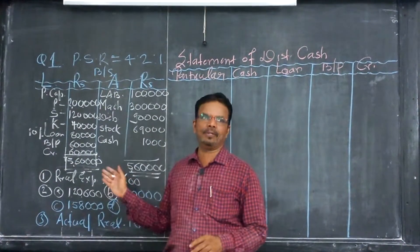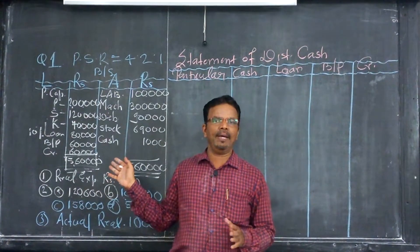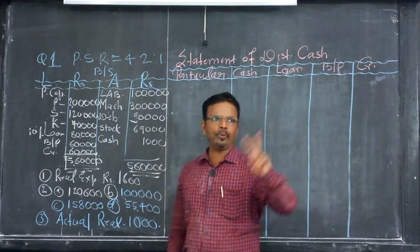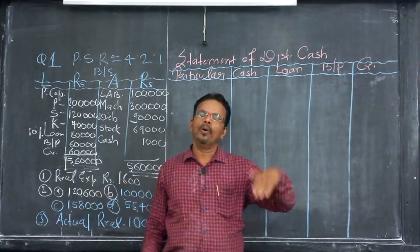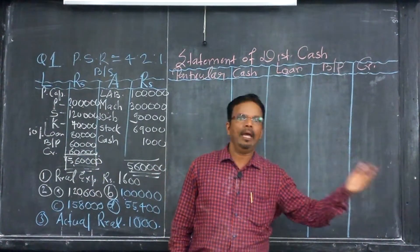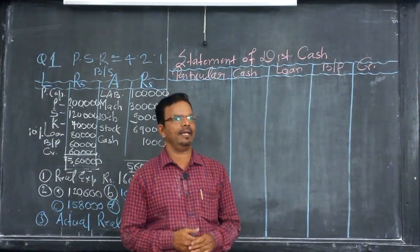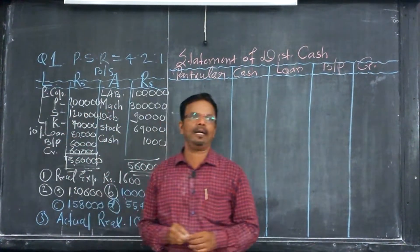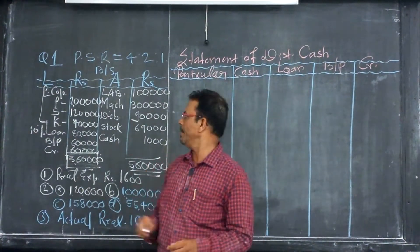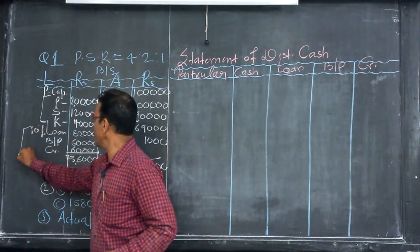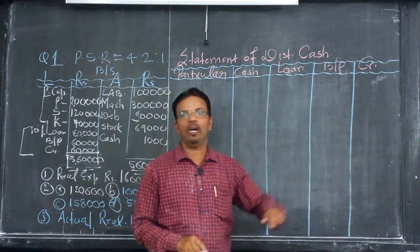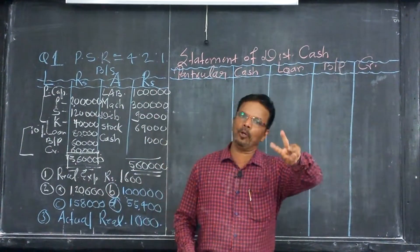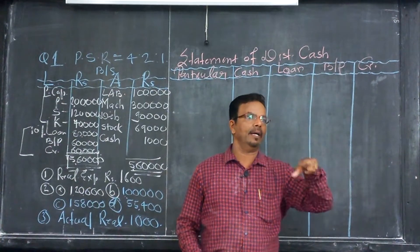Let's revise the question. What is given in the balance sheet? We have two liabilities in the balance sheet. One is the outsider liability and the second is the insider liability. Partner's capital is called the insider liability. Bank loan, bills payable, and creditors are called outsider liability.